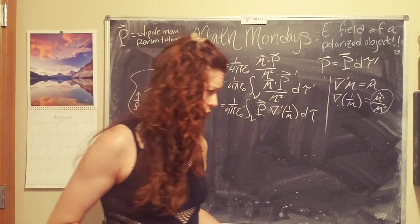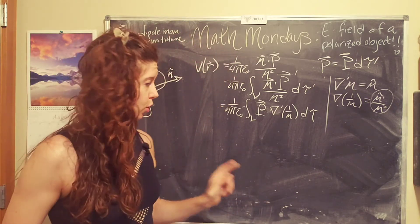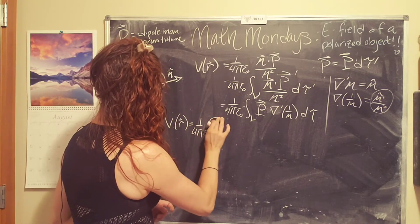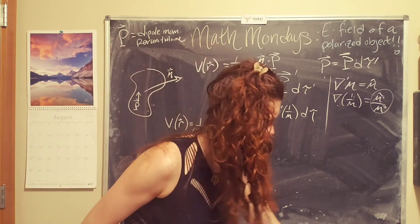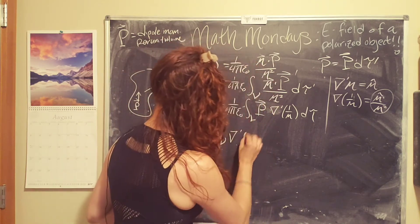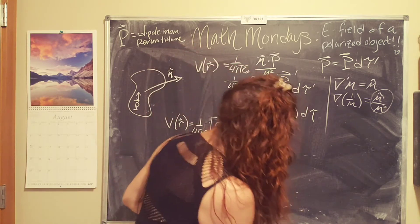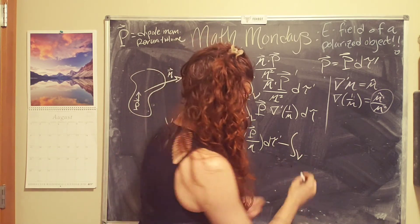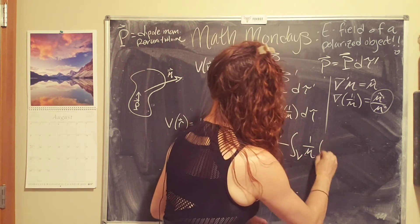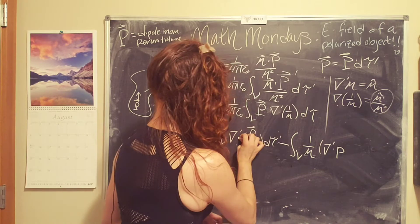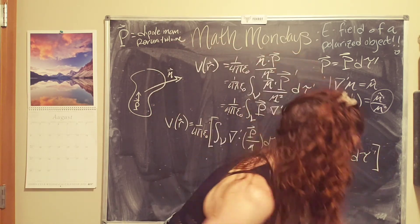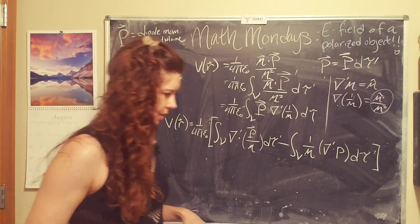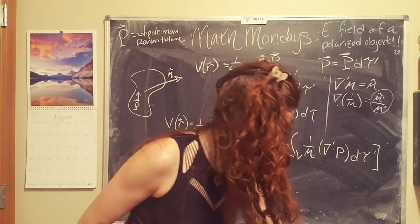So now we are going to do integration by parts using product rule number three. And so we get r equals 1 over 4 pi epsilon naught. The first term is going to be del prime times the polarization divided by script r over the volume minus the integral over the volume times 1 over script r del prime dot p times d tau. I get very excited and very crooked.